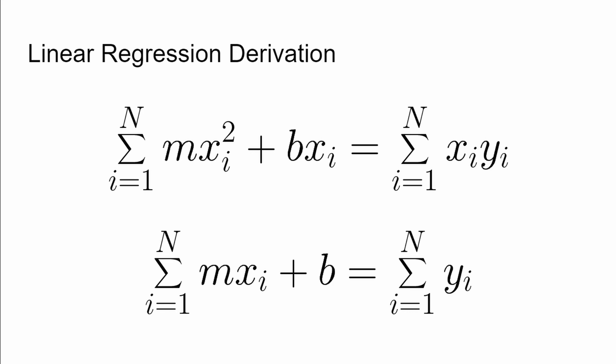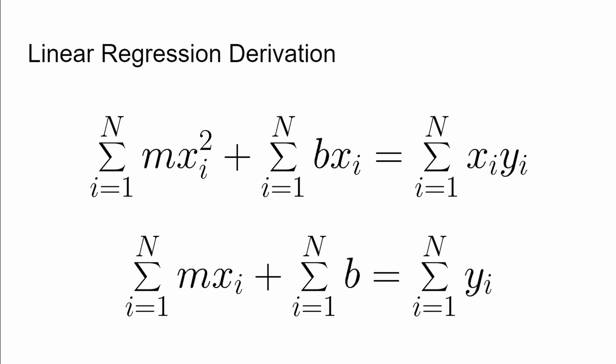Now I'm going to solve this bottom equation here for b. Now I'm going to kind of distribute through the summation signs. So I want to explicitly show all the terms that we are summing over. Now notice here in this bottom equation we have this term sum over b.